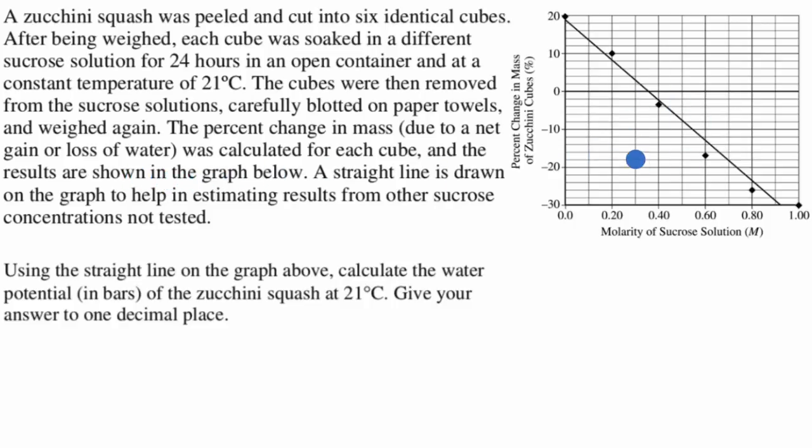I put the graph to the right, right over here. A straight line is drawn on the graph to help in estimating results from other sucrose concentrations not tested. Using the straight line on the graph above, calculate the water potential in bars of the zucchini squash at 21 degrees Celsius. Give your answer to one decimal place. So pause this video and see if you can have a go at it.